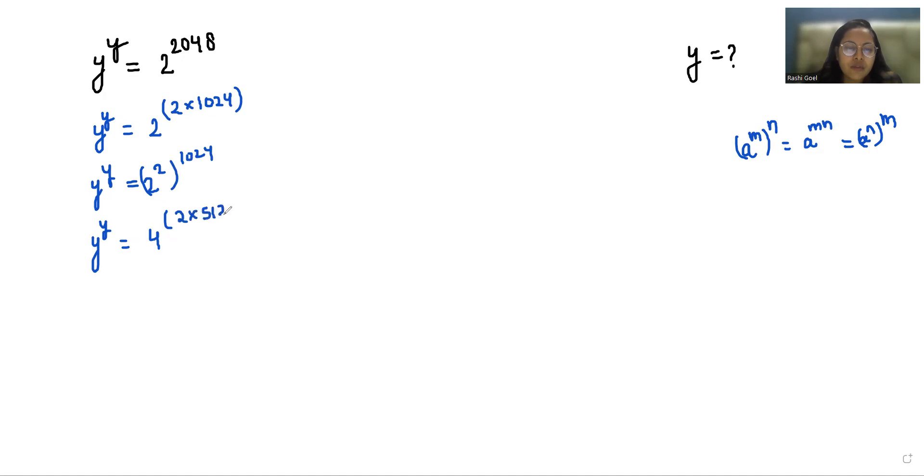Again using this identity, we continue the pattern with 2 times 512.